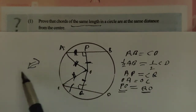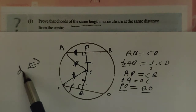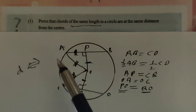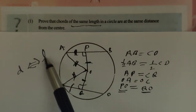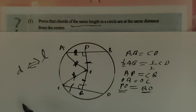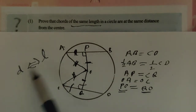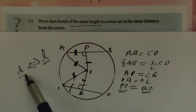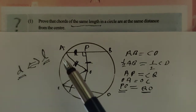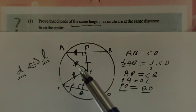So the two sides of the theorem are: if the perpendicular distance is equal, that implies the chords have equal length. And the reverse is: if the chords have equal length, then the perpendicular distance is also equal.